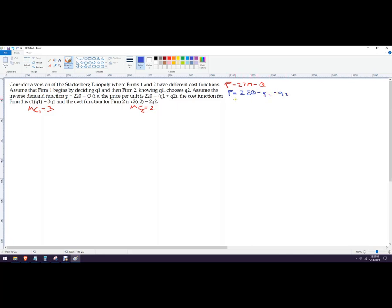So firm 1 gets to pick first, so they're going to maximize on this, and we're just going to plug in the reaction function for firm 2 into that bigger demand function, and then maximize on that, which basically means we're going to choose where the marginal cost equals the marginal revenue for firm 1, and that's the quantity firm 1's going to pick. Firm 2 gets whatever's left over. We add those two quantities together, and then we get the price.